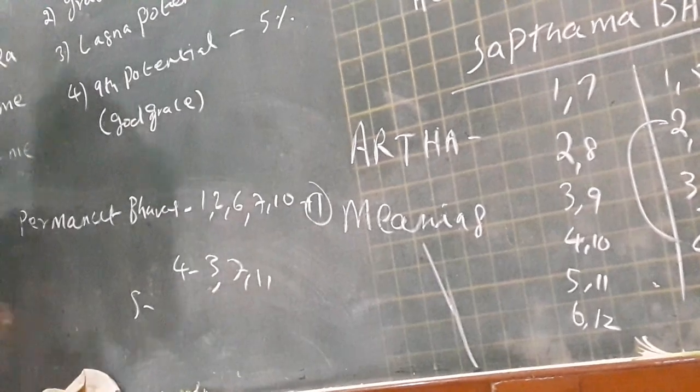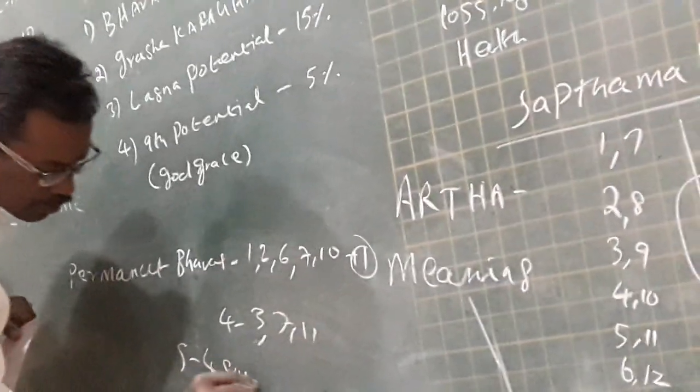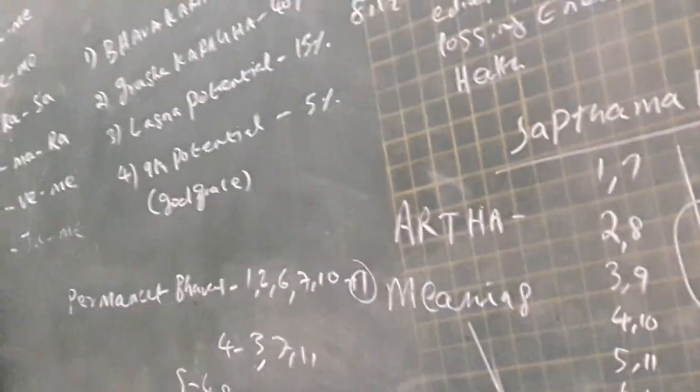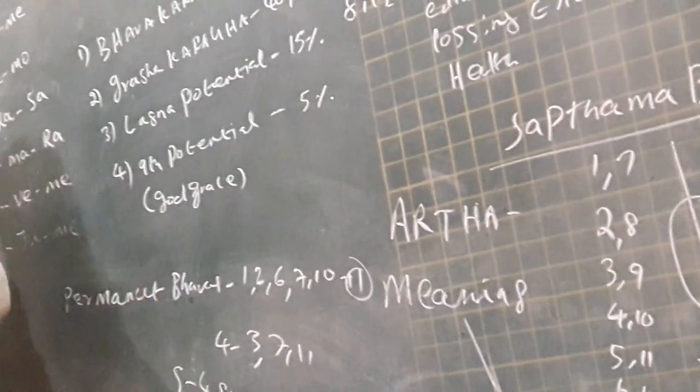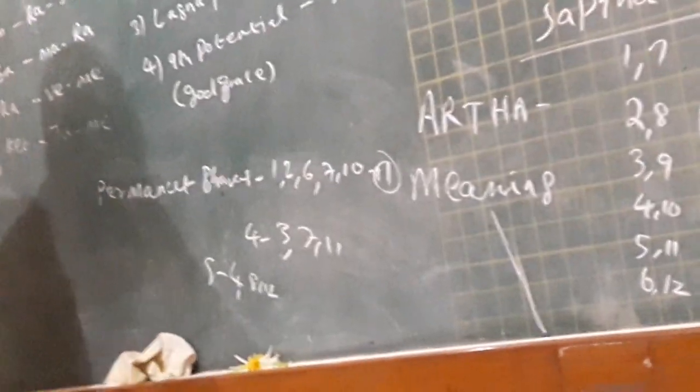Dasa buddhi will help. 5th house is connected in 4, 8, 11. Some difficulties from the child. Due to Dasa buddhi, definitely one or two child becomes.